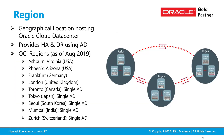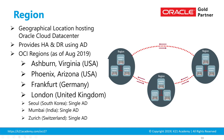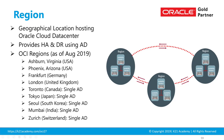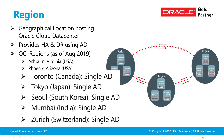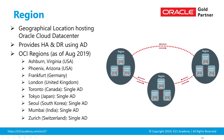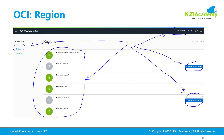As of August 15th, 2019, Oracle has nine regions in total. The first four have three availability domains, while the latest five added in 2019 all have a single availability domain. When a new region is added in Oracle Cloud, your users can't use it unless your administrator goes and subscribes to that region.